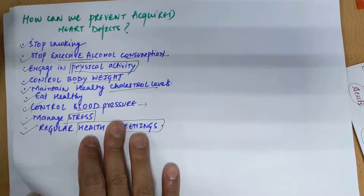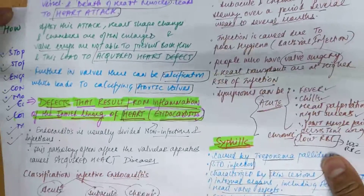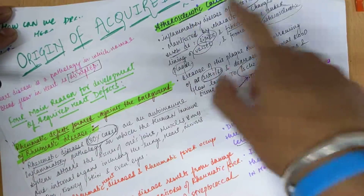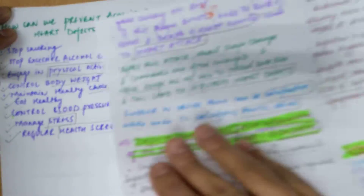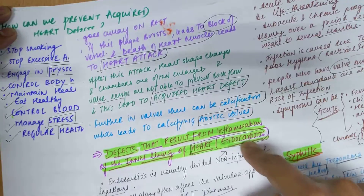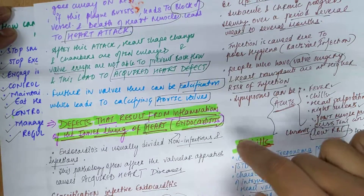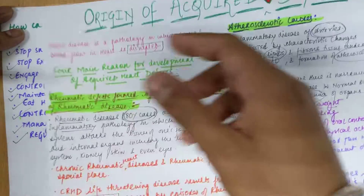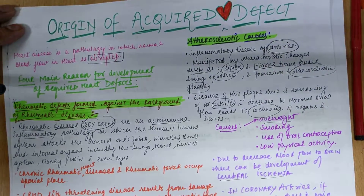In summary, the four main causes of acquired heart defects are: rheumatic heart disease, atherosclerosis, endocarditis, and syphilis. This concludes our discussion on the origin of acquired heart defects. Thank you.